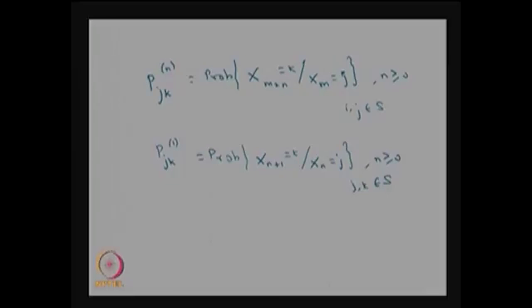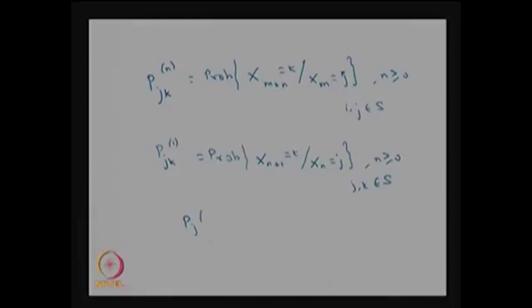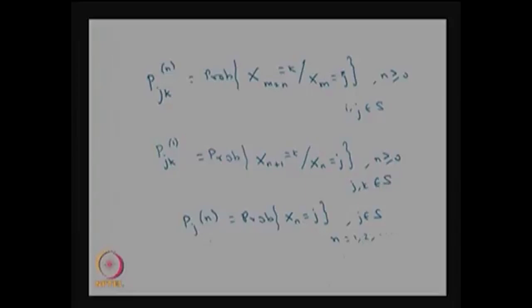Our interest is to find out the distribution of xn. Whenever the sequence of random variables xn is a time-homogenous DTMC, we want to find the distribution of xn. It has the probability mass function p_j(n), which is the probability the system will be in state j at the nth step. j belongs to S and n can be 1, 2, 3 and so on, since we know the distribution at n=0.